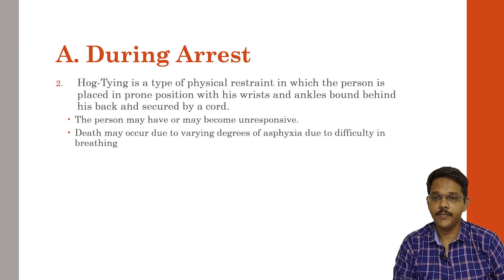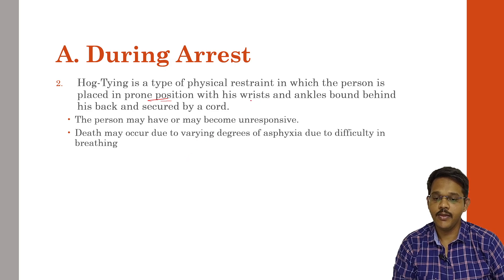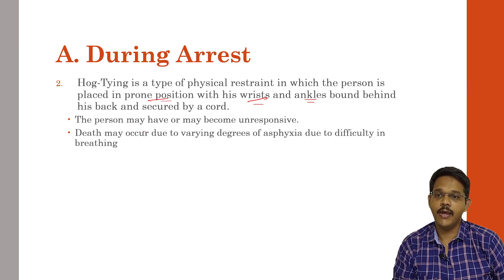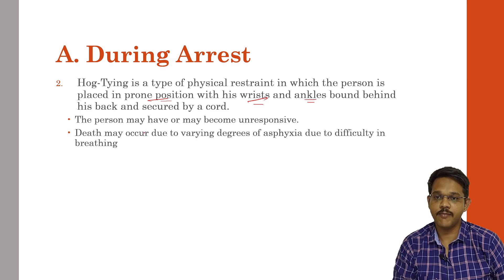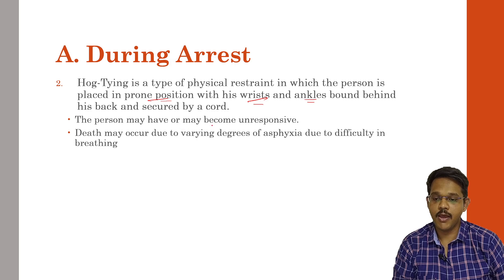The next type during arrest is hog tying. Hog tying is a type of physical restraint in which the person is placed in a prone position — facing the ground with his wrist and ankles bound behind his back. So the person's chest is on the ground and his arms and legs are tied behind him. This type of restraint may prevent the person from breathing properly, leading to varying degrees of asphyxia and death.